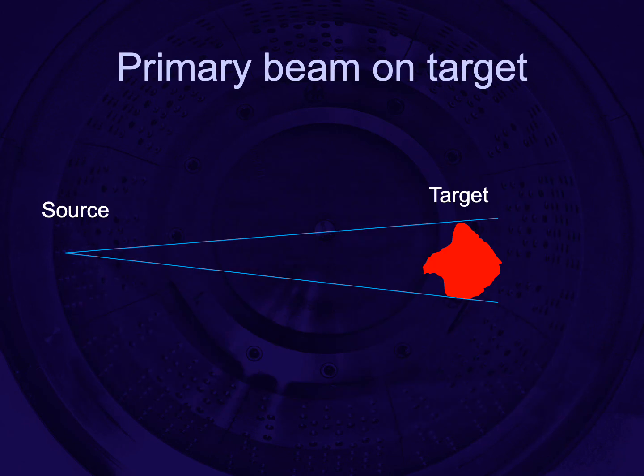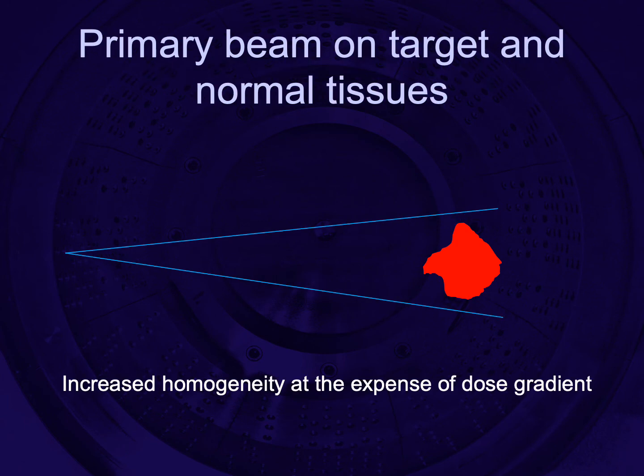If we have our radiation source and our target, one approach is to ensure the edge of the beam just touches the edge of the target — this gives the steepest dose fall-off possible. What is often done with some radiosurgery technologies is to open up the beam a bit, which increases homogeneity inside the target but at the expense of dose gradient.